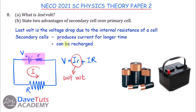The advantages of a secondary cell over a primary cell are: first, it produces current for a longer time; second, it can be recharged — you use it, it depletes, you charge it and use it again. With primary cells, once used, you must discard them.